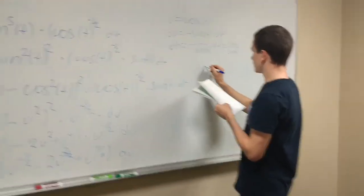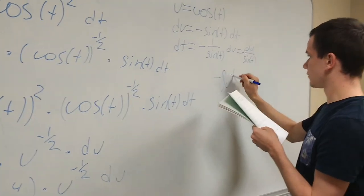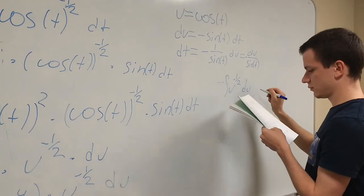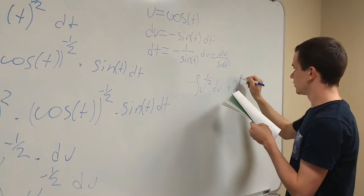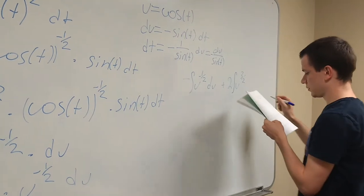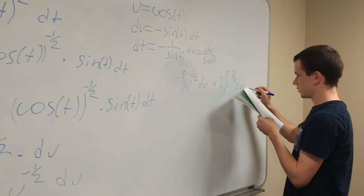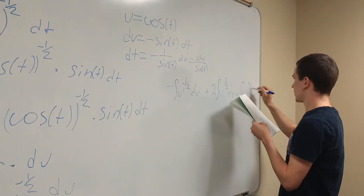So first one will become negative u to the negative one half du plus two integral of u to the three halves du, and minus integral of u to the seven halves du.